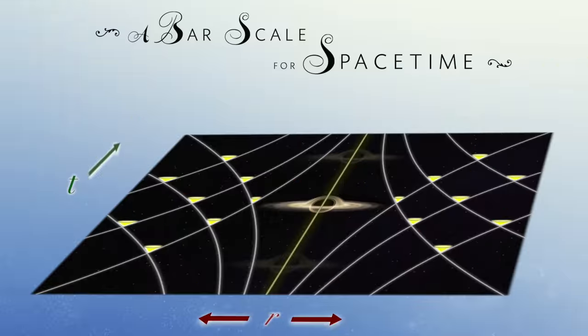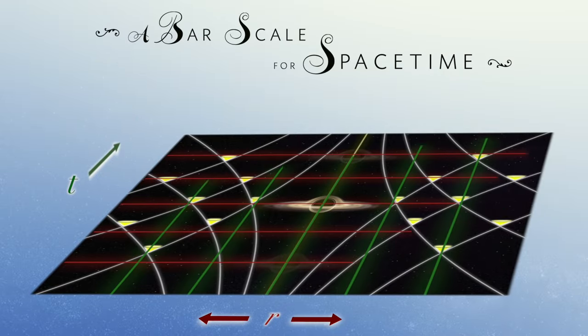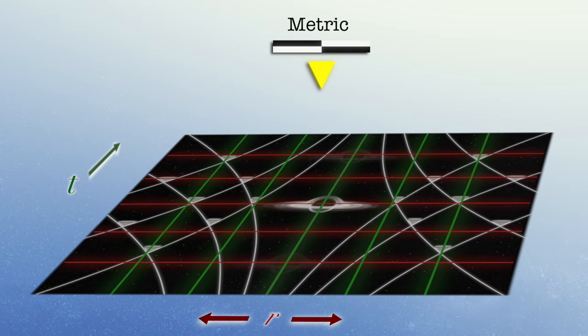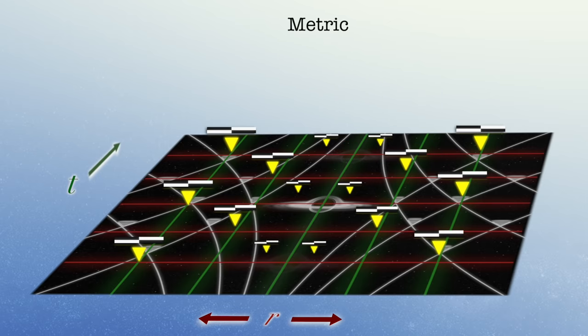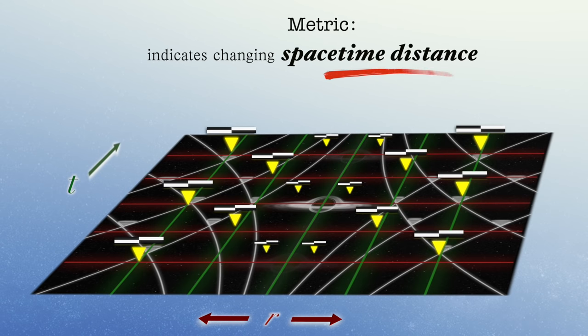Similarly, on our map of space-time, we'll need a metric, or bar scale, at every single space-time point to indicate how our space-time distance is changing across the map.